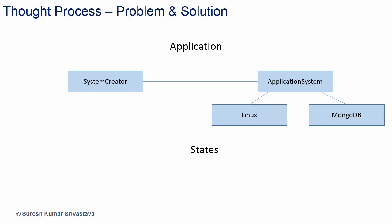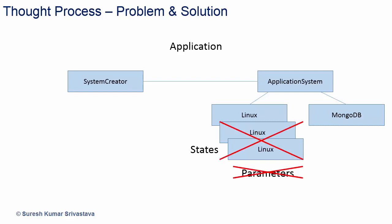But what if the object requires different states? For example, a Linux object has some changes in processor, memory, image, etc. Can we think of having classes for different states? No — it will require unnecessary classes. Can we think of passing different parameters to the constructor for different states? Of course not — it will become very complex, require a lot of hard coding, and make future changes difficult.